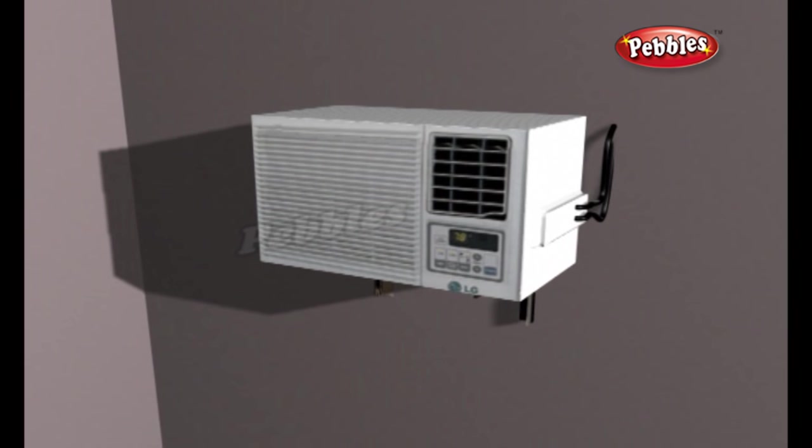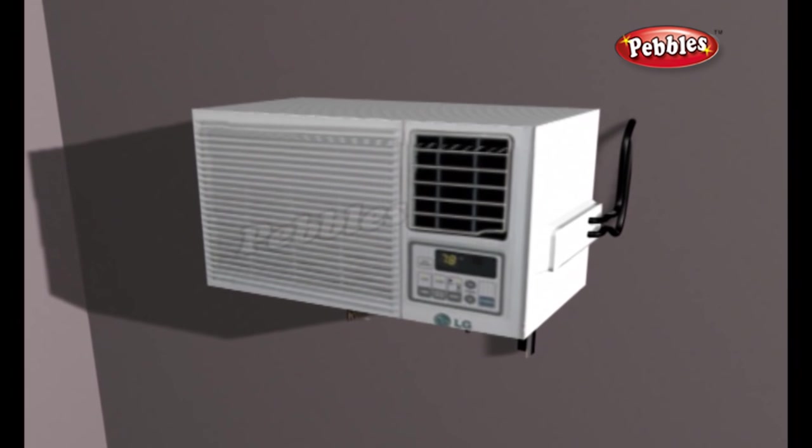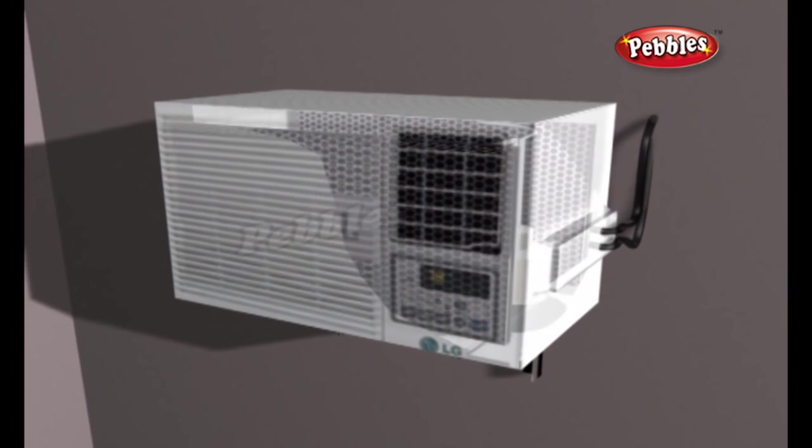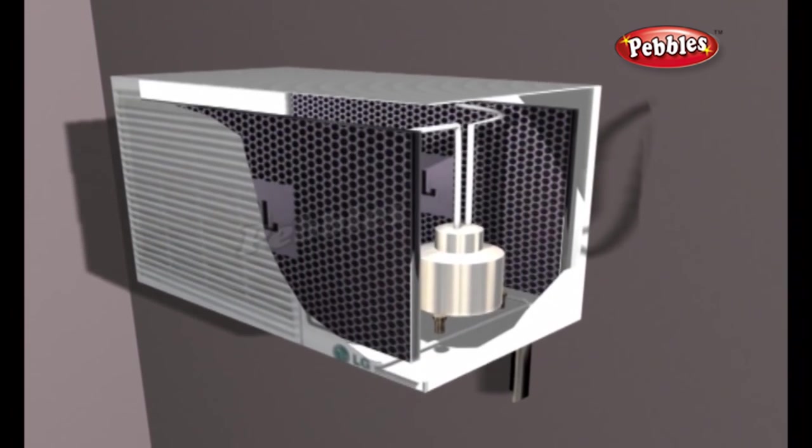All room air conditioners function pretty much the same, although energy savings and cooling capacity vary by brand and model. The basic components are a compressor, evaporator coil, refrigerant-filled tubing, and condenser coil.